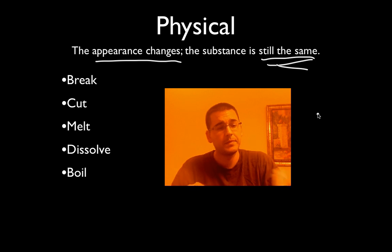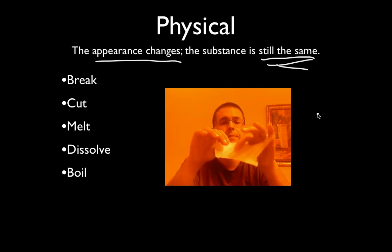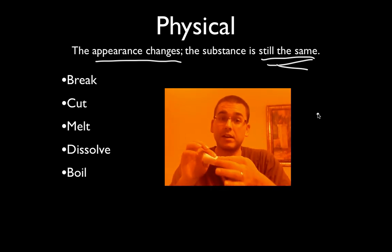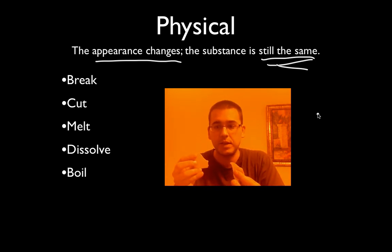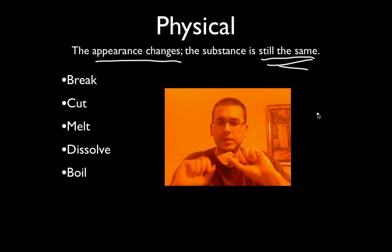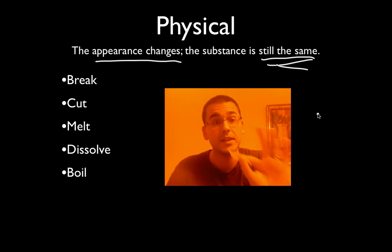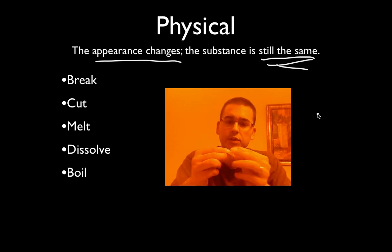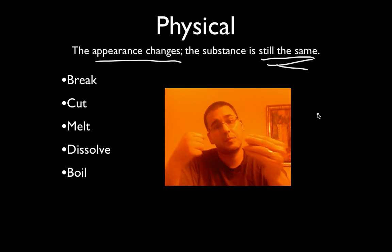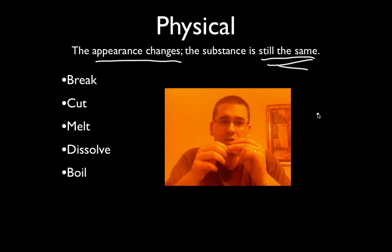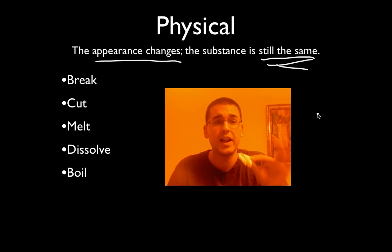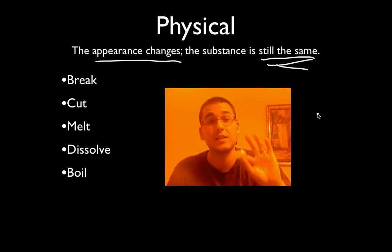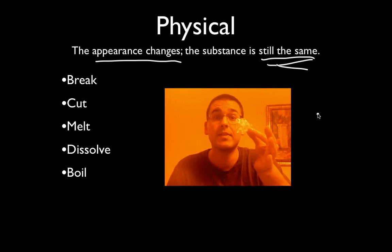To start, I'll take this piece of paper here. I could rip it into smaller pieces — it's still paper. This has not become something new; it is still the same thing. I could crumple it, I could punch it, I could do whatever I want to it. It's still paper. The important part as we go through these examples is that the substance remains the same thing.